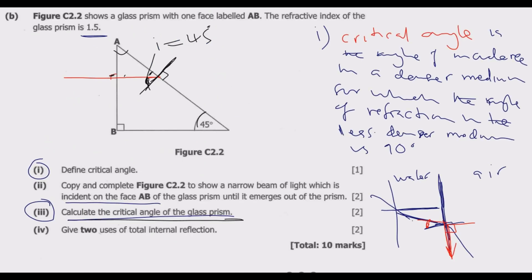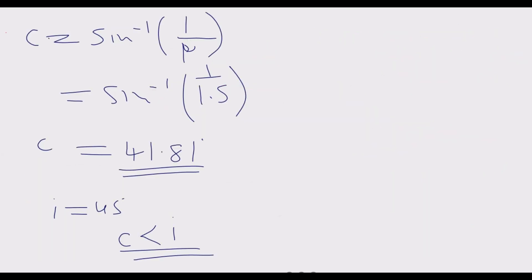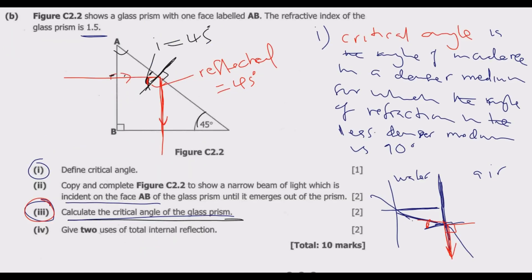This tells me that the reflected ray will come out from here down here. The reflected angle will be equal to 45 degrees, which is the same as the incident angle. Once you do that, you are good to go. Number 3, we've already calculated this as the critical angle.